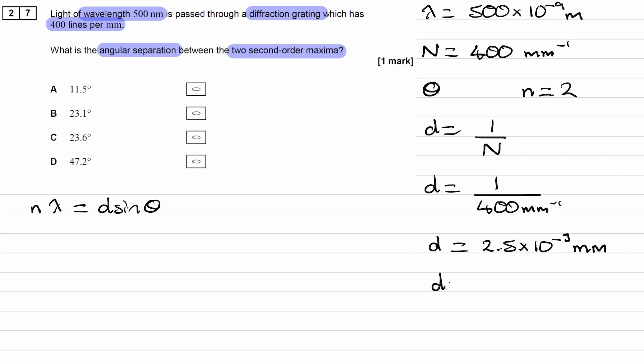Convert to meters by dividing by 1000, giving 2.5 times 10 to the minus 6 meters.